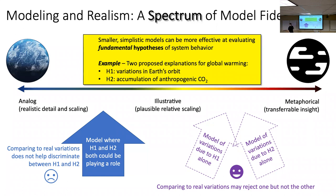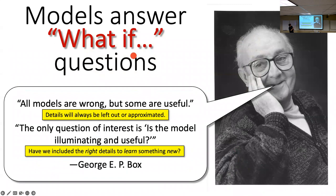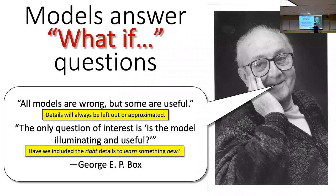Models answer 'what if' questions. All models are wrong, but some are useful — details will always be left out or approximated. The question of interest is: is the model illuminating and useful? Have we included the right details to learn something new? We know models are going to be wrong. Our goal is not to make them right. Our goal is to make them wrong in a way that helps us address causal questions generally.